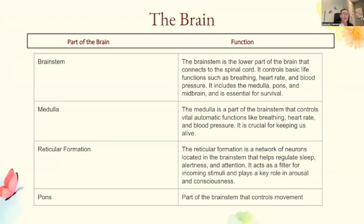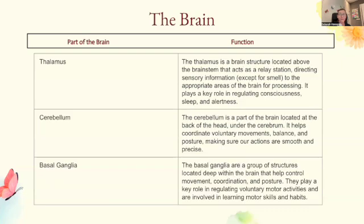The reticular formation is a network of neurons located in the brainstem that helps regulate sleep, alertness, and attention. It acts as a filter for incoming stimuli and plays a key role in arousal and consciousness. The pons is the part of the brainstem that controls movement.